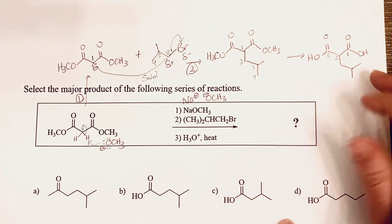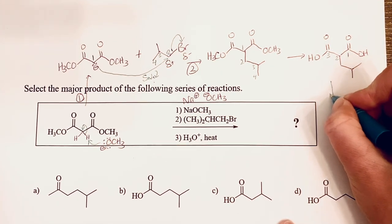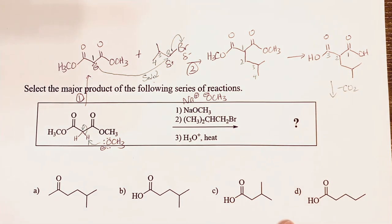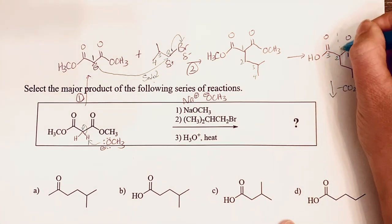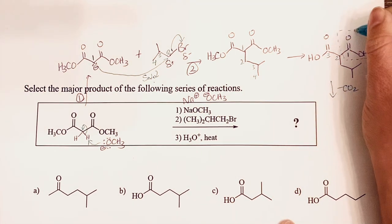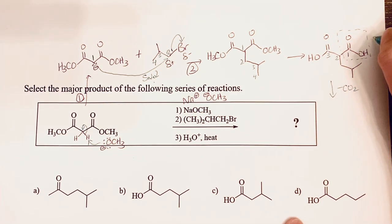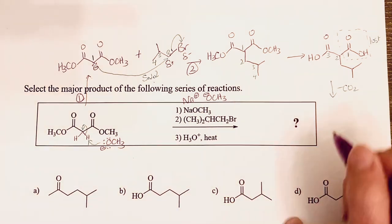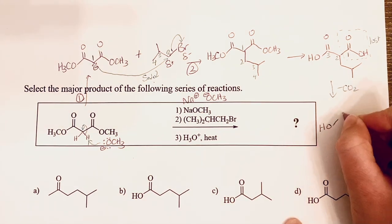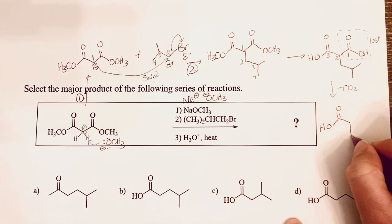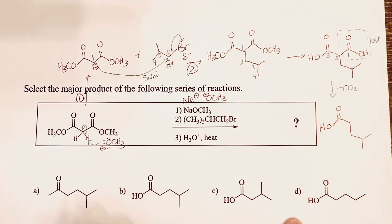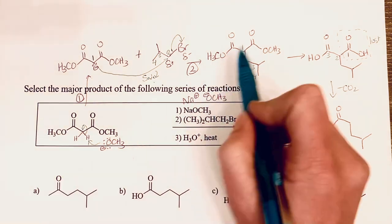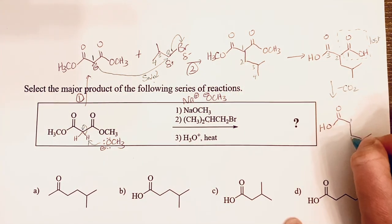Decarboxylate means to lose CO2. To draw the product, we just need to picture that this is the part of the molecule that's going to be lost. When we take that off, we're gonna be left with that original carbon one that we started with here, two, three, four, the piece that we added. So we formed a substituted carboxylic acid.